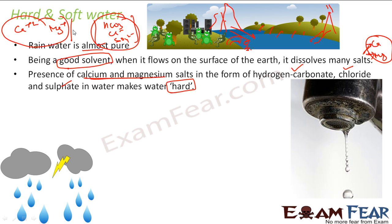These cations — calcium and magnesium — along with bicarbonate, chloride, and sulfate ions are the cause of hardness. If you look at a tap after long use, calcium and magnesium salts get deposited there because of hard water. You must have seen in your house that sometimes pipes get blocked. After two or three years the pipe gets blocked and your dad calls a plumber who either changes or cleans the pipe. That is because we generally use hard water, and calcium and magnesium salts get deposited inside the pipes.